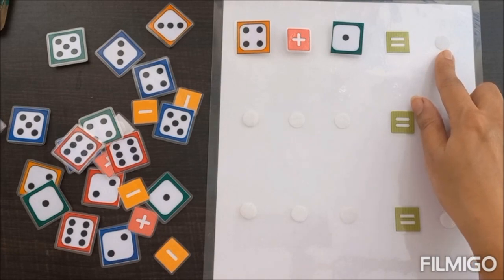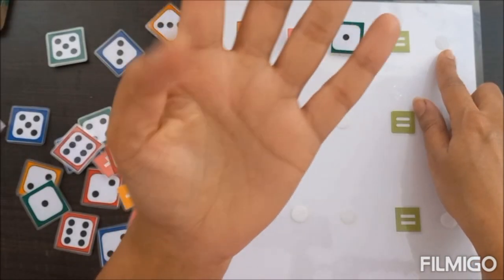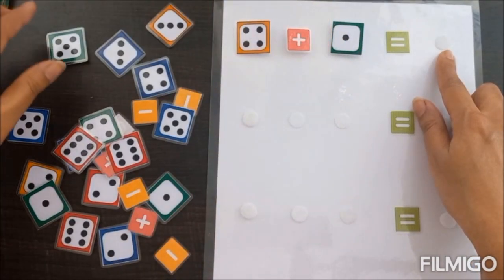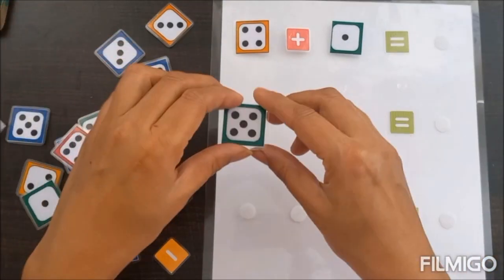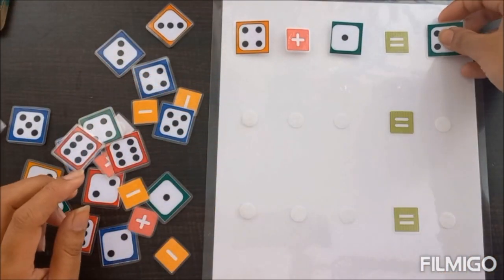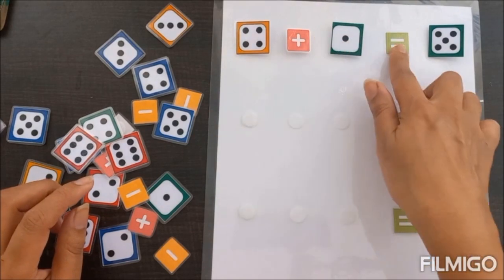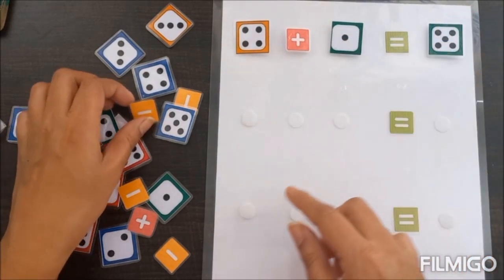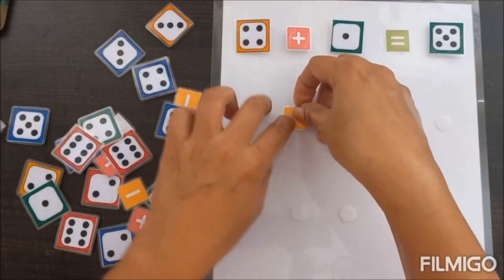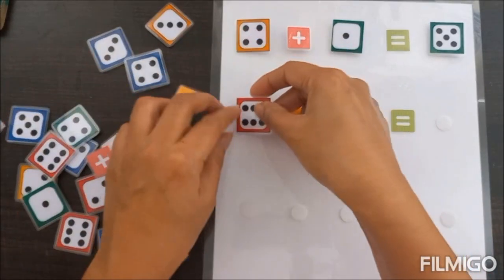the child will attach the answer here. 4 plus 1 is 5, so the child will pick the correct answer on the dominoes and stick it here. 4 plus 1 equals 5. Similarly, we'll do subtraction here: 6